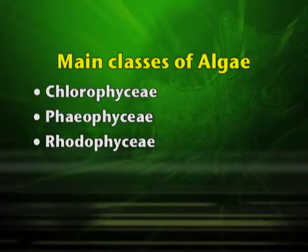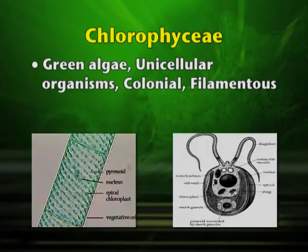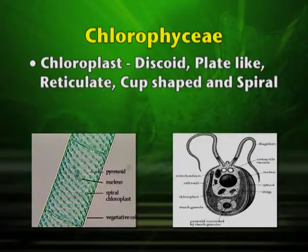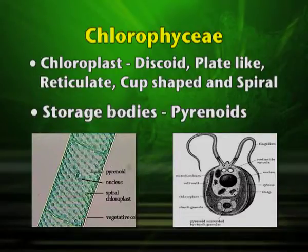Characteristics exhibited by Chlorophyceae: mostly they are green algae. They are unicellular organisms; they may be colonial or filamentous. They have the presence of chlorophyll A and B. The cell wall is made up of cellulose. The chloroplast is of various different shapes — it may be discoid, plate-like, reticulate, cup-shaped or spiral. The storage bodies are the pyrenoids, which store starch.